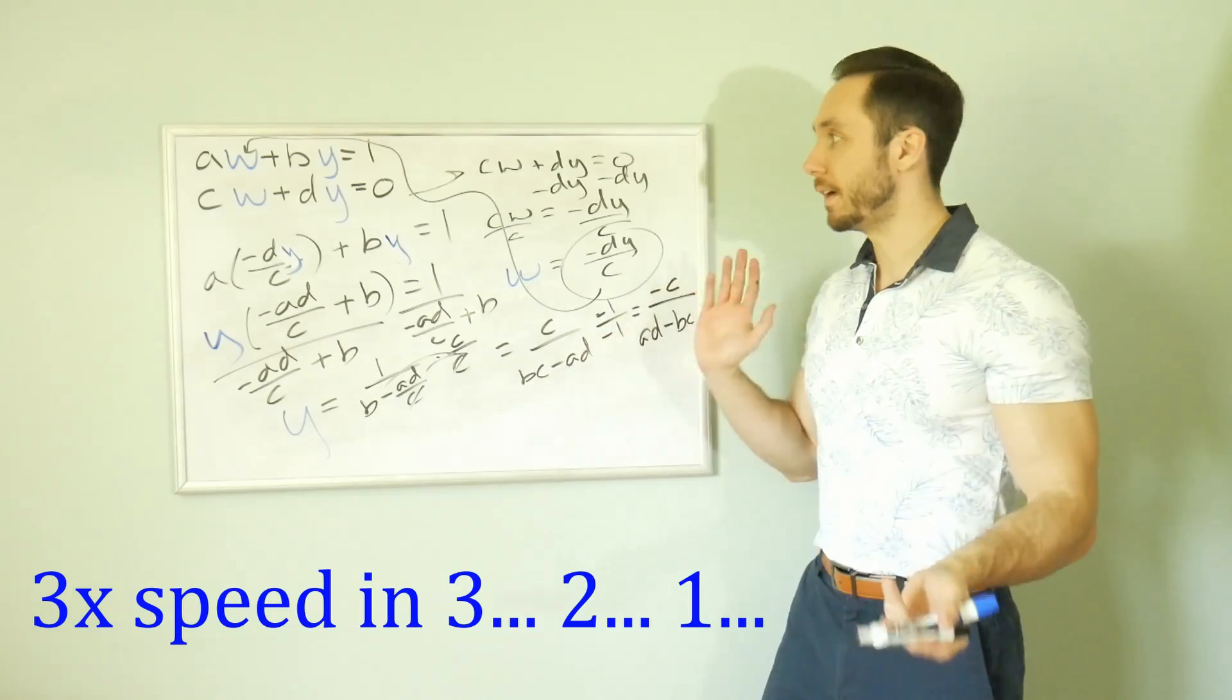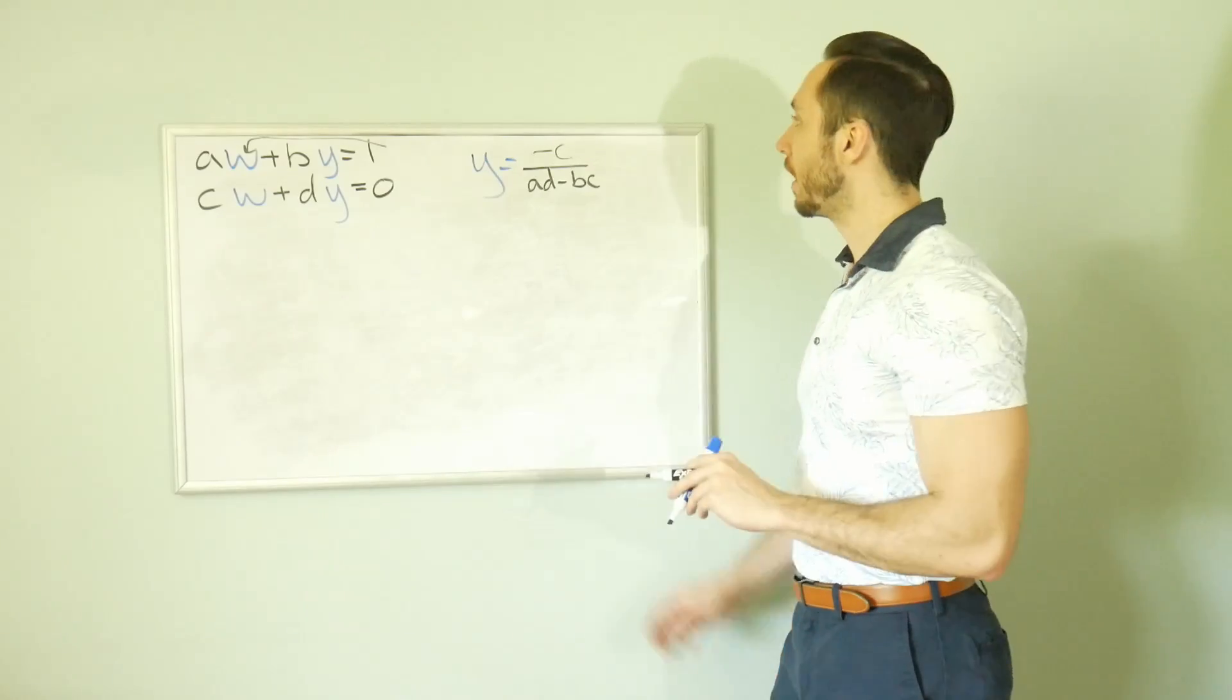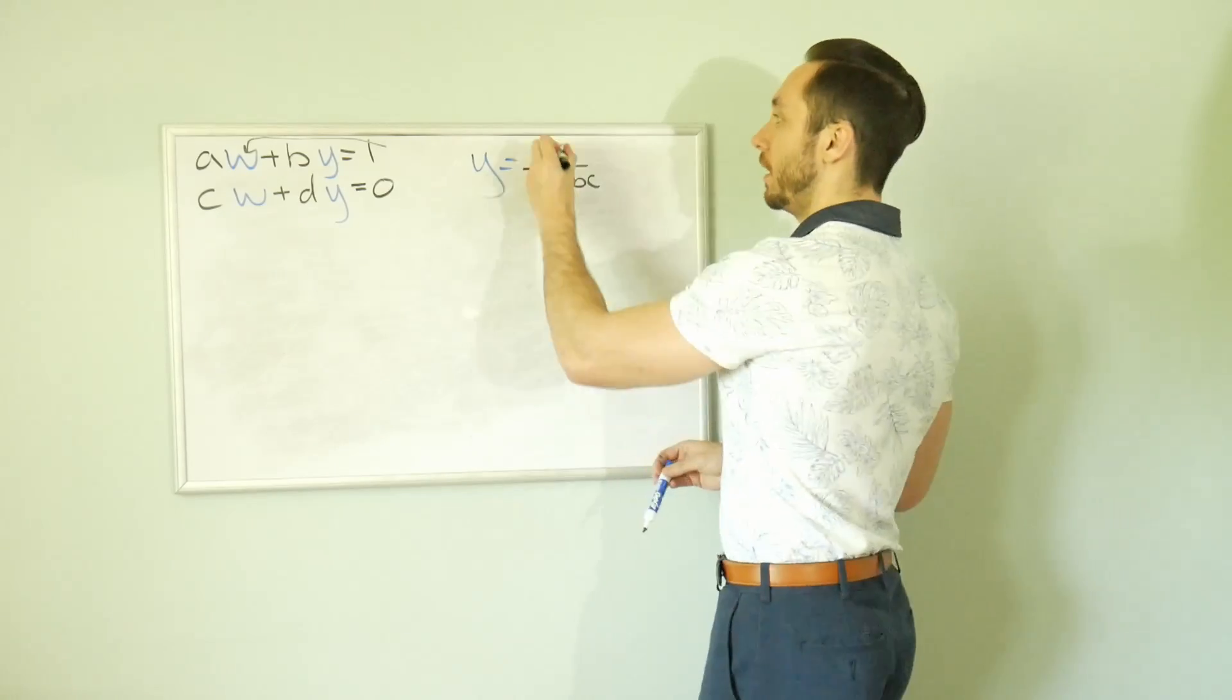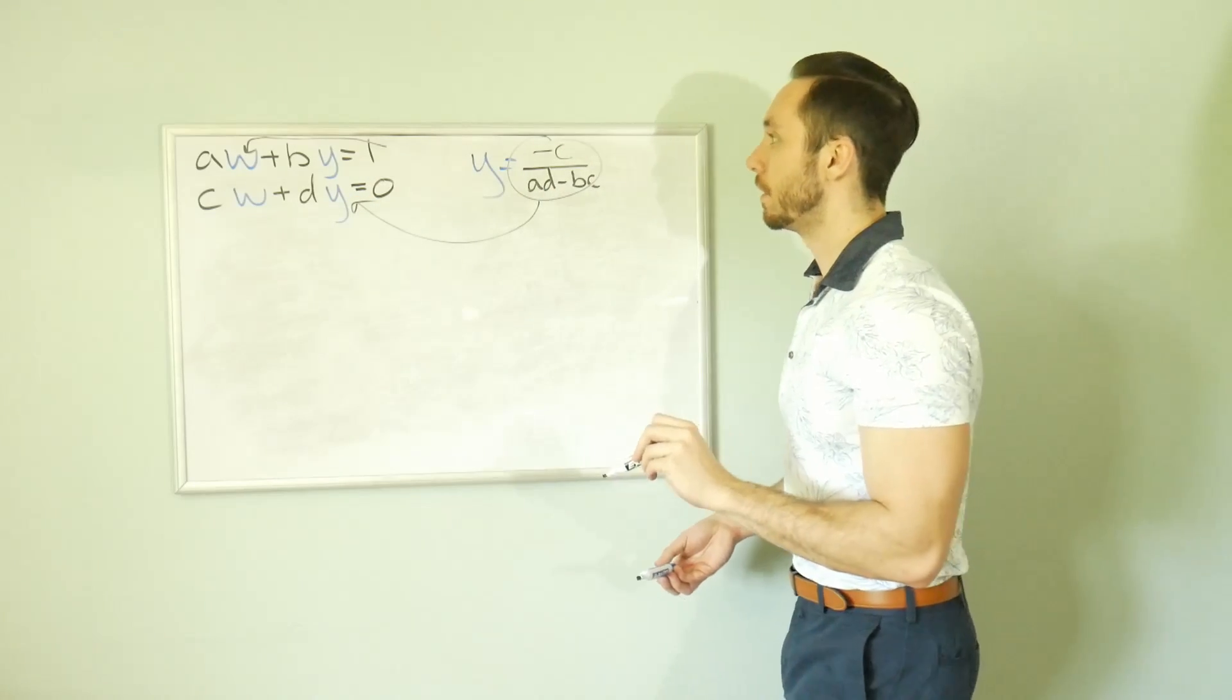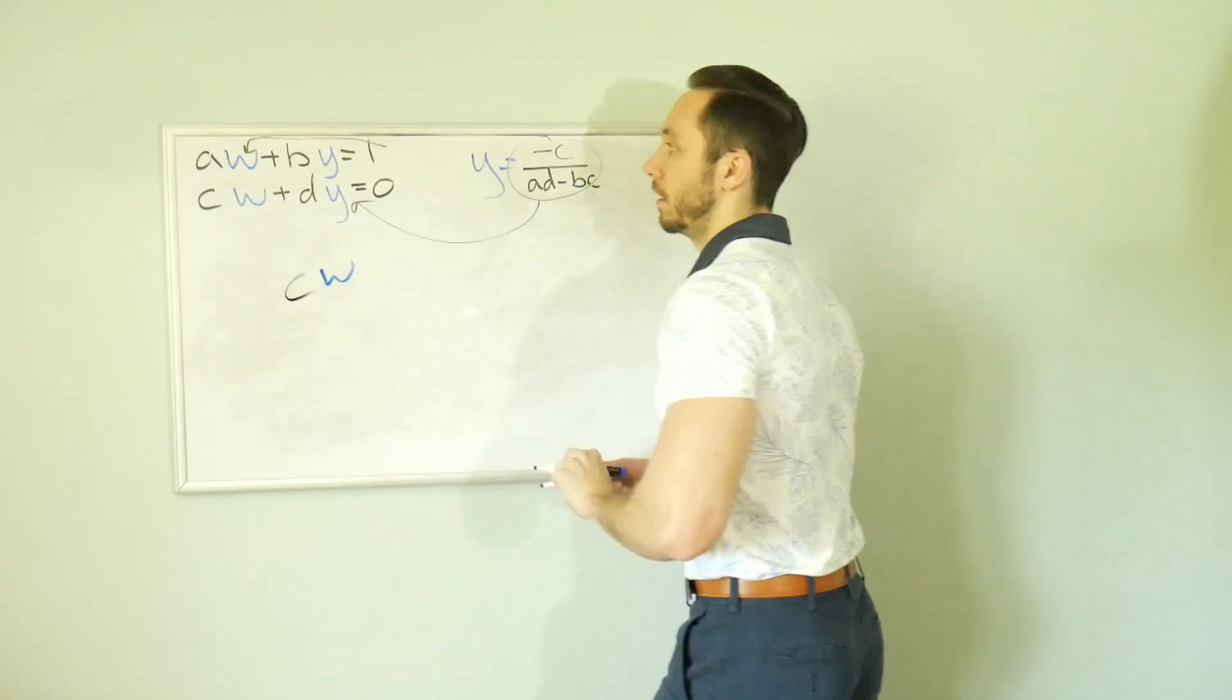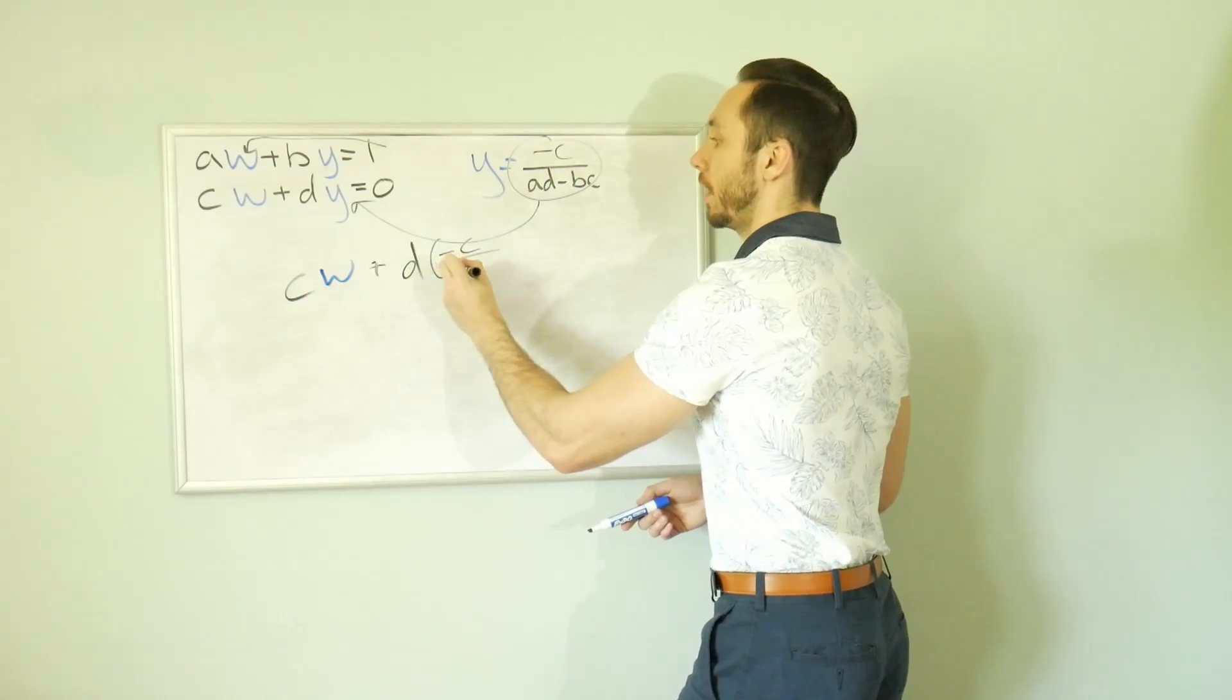So now we have Y. All that's left is W. Long stretch here. We have Y equals negative C over determinant AD minus BC. Let's plug this into this one. So I like zero on the bottom. We're going to have CW plus D times negative C over AD minus BC. Then equals zero.